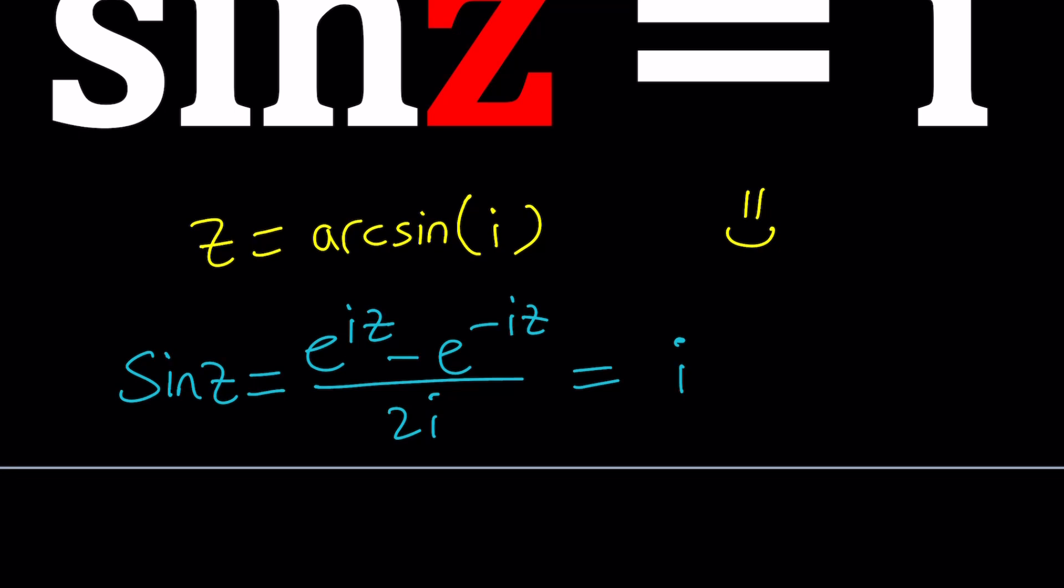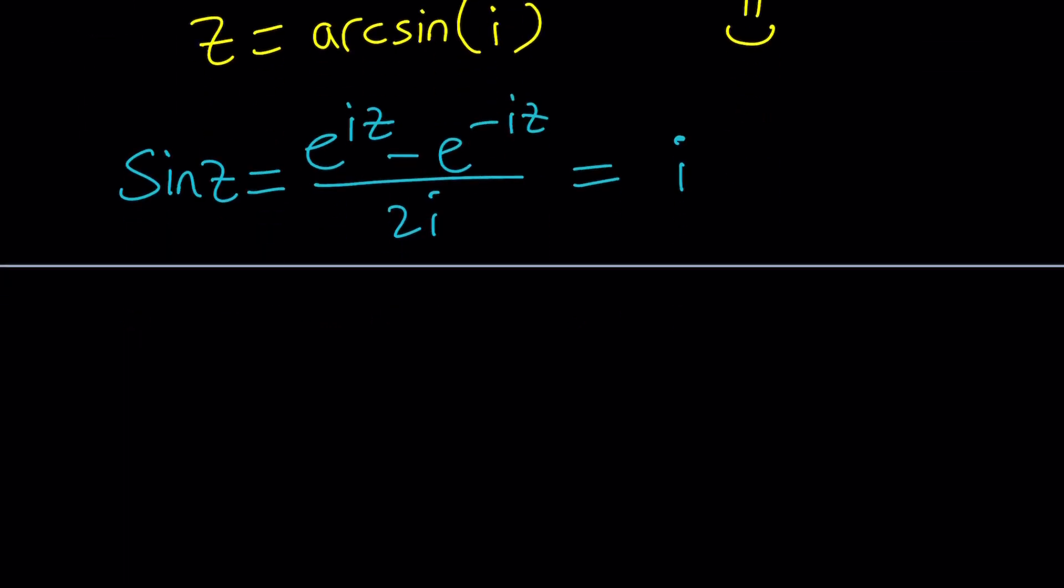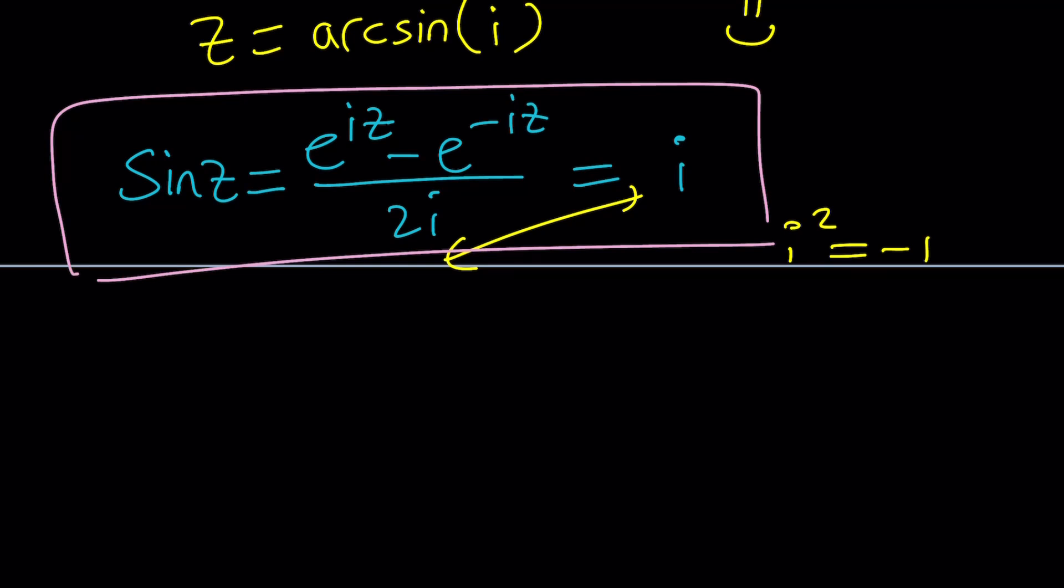And then just solve for z. How do you solve for z? Let's go ahead and cross multiply first because that's going to give us i squared, which is negative 1. Don't ever forget that. If you forget everything about complex numbers, one thing you should always remember, i squared equals negative 1. So let's go ahead and cross multiply and try to solve for z.